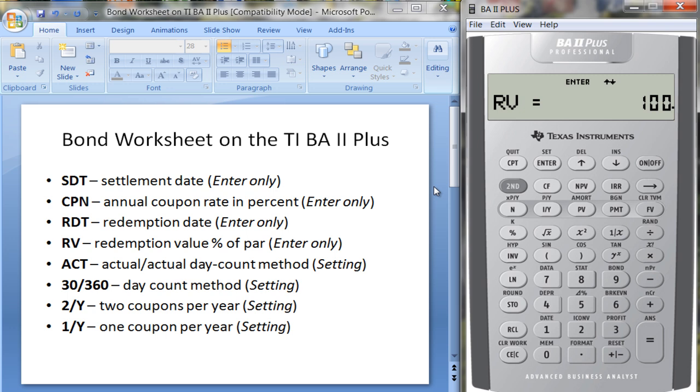For example, you might have a bond that's callable, in which case maybe you get a premium when you redeem it—a 5% premium, so you would put in 105. Here we have ACT—this is the actual day count method. You can change it to 360 day count. We'll stay with the actual day count.